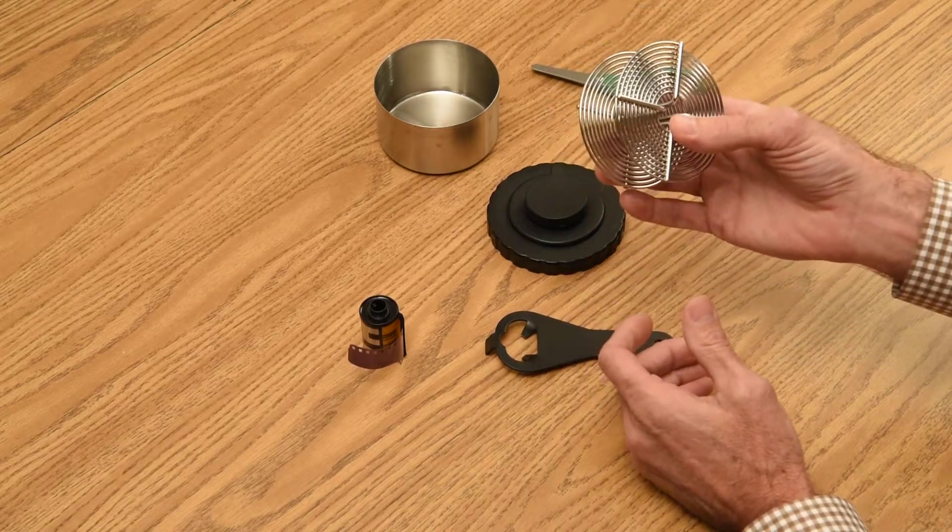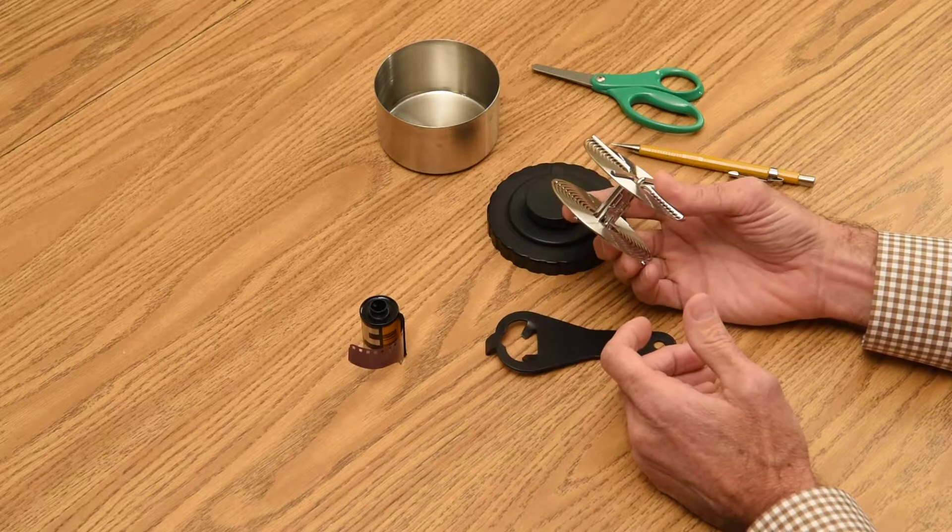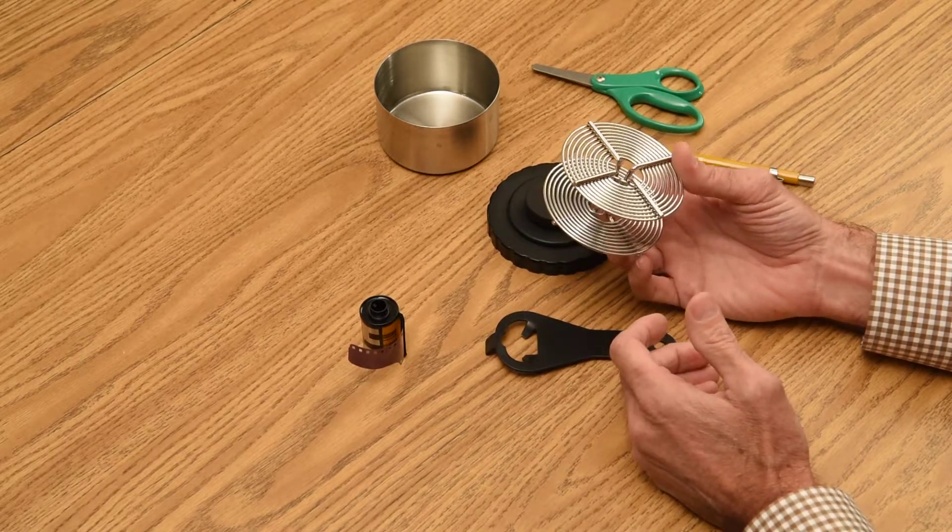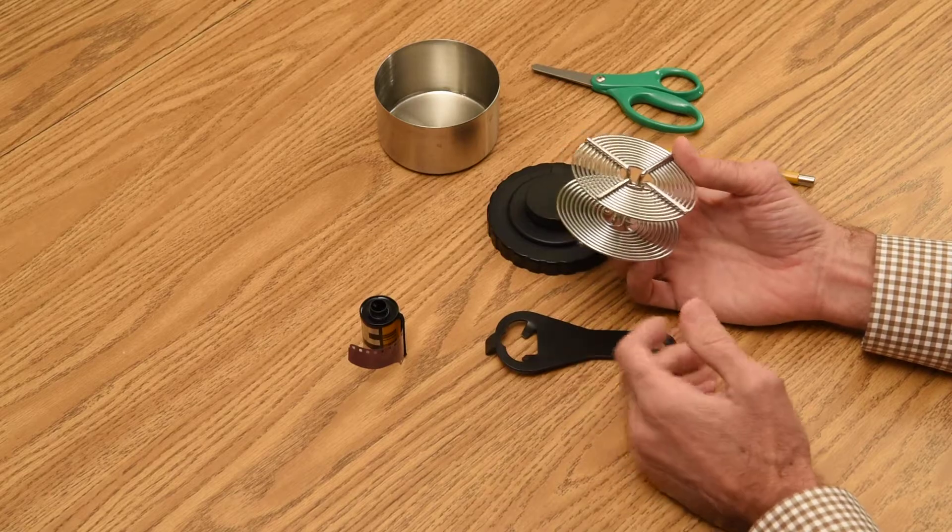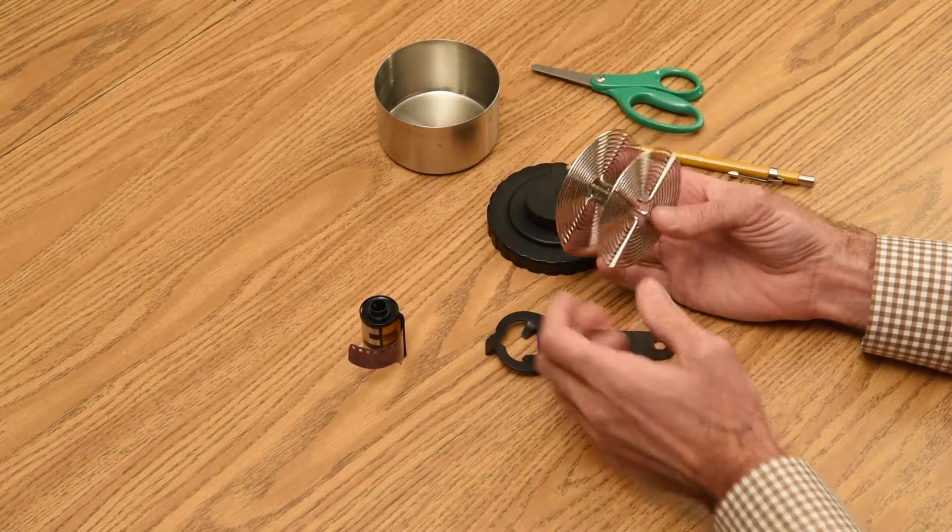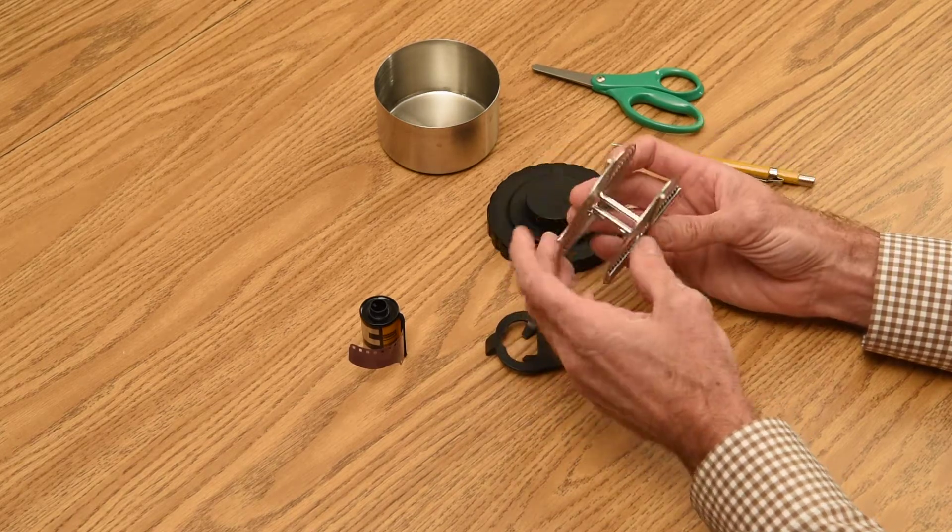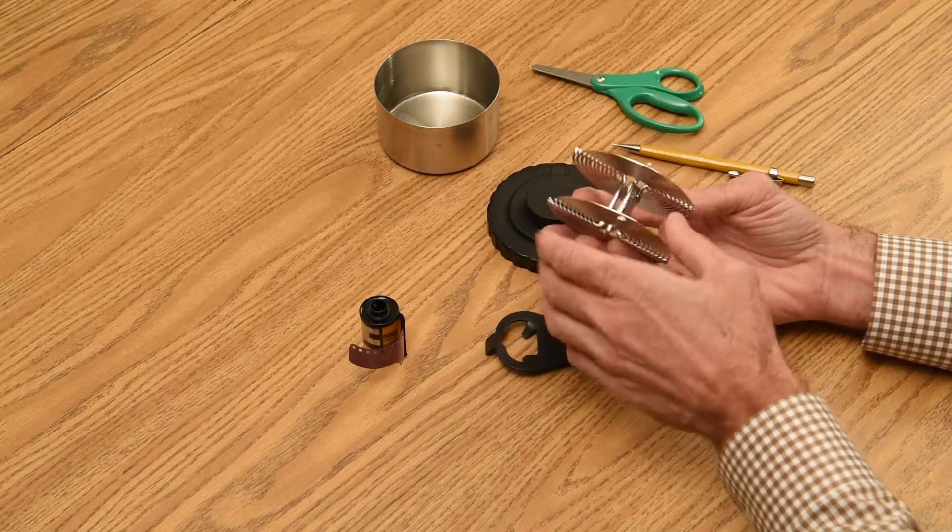I'm not here to endorse particular products, but this reel is a Hughes brand reel, H-E-W-E-S, and I do find that Hughes reels are much easier to roll on than less expensive products. The gauge of the metal is wider, and it just has a better anchoring system.